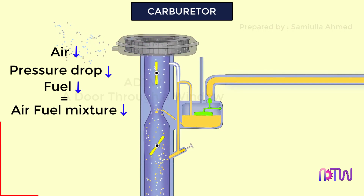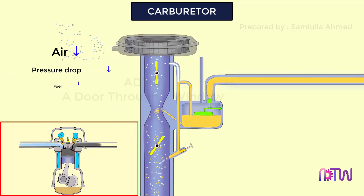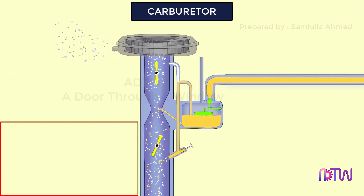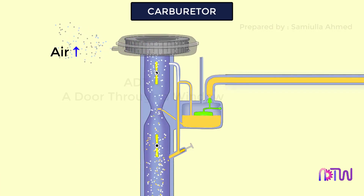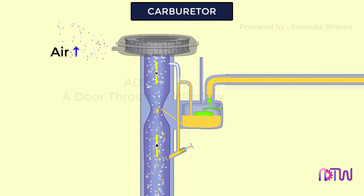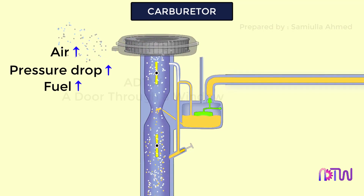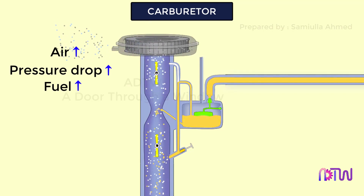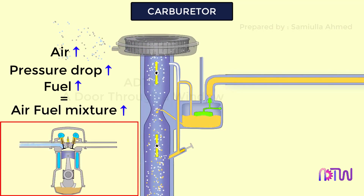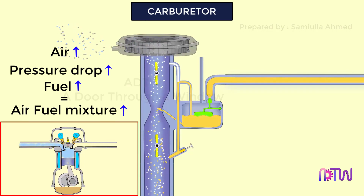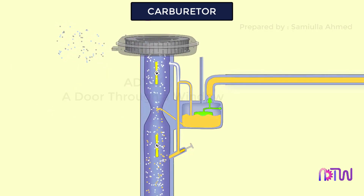If the throttle valve is fully open, more air flows through the venturi, causing a greater pressure drop in the venturi region, which causes more fuel to discharge through the discharge nozzle. As a result, more air-fuel mixture is delivered to the engine cylinder and the power output of the engine is increased.